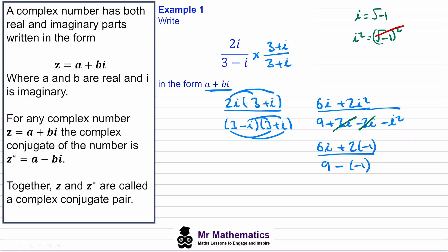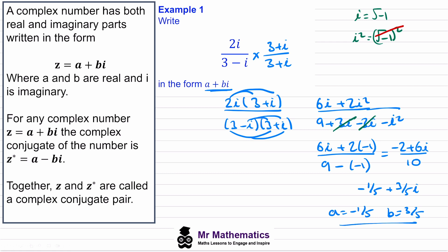This simplifies to negative 2 plus 6i over 10. To write this in a plus bi form we divide both parts by 10, giving us negative one fifth plus three fifths i. So a equals negative one fifth and b equals positive three fifths.